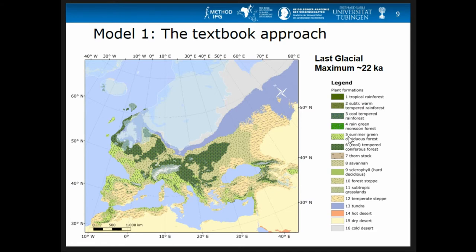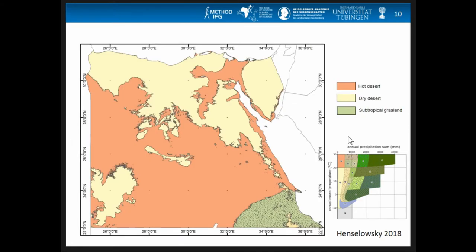We also applied this in Egypt, where Felix Hanselowski spoke earlier. The results there are not so good, because this is a global model and everything between zero and 500 millimeters of precipitation is classified as hot desert, so that entire boundary area comes out as hot desert. We need a more detailed model for this local area, and in future models we want to split that patch and make finer subdivisions for desert environments.